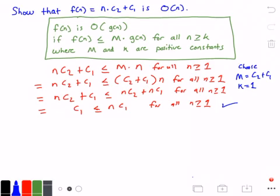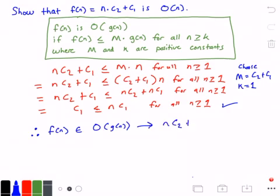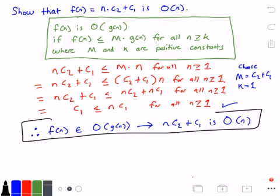So we have now proven — therefore — we have shown that our function f of n belongs to big O of g of n, which implies that n times c₂ plus c₁ is big O of n. That is always true, and that is our answer. And that's it for this proof.